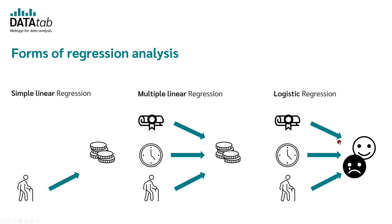In contrast, logistic regression is used when you have a categorical dependent variable — for example, when you want to infer whether a person is at risk of burnout or not. Whenever you have yes-or-no answers, you use logistic regression. In linear regression, the dependent variable is metric; in logistic regression, it is categorical. Examples include: does a person buy a product — yes or no? Is the person healthy or sick? Does a person vote for a certain party or not?